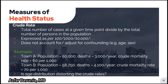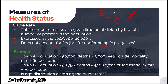Next let's talk about crude and adjusted mortality rates. The crude rate is defined by the total number of cases at a given time point divided by the total number of persons in the population, expressed as per hundred, per thousand, per ten thousand, etc. The important distinction is that the crude rate does not account for or adjust for confounding. Confounding factors are associated with both the exposure and the disease and can potentially distort the results of the study. Frequently, demographic factors such as age and sex are common confounders. We will talk more about confounders in a future video.